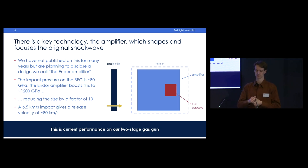The amplifier does two things. First, it boosts the effective velocity - the projectile hits at one velocity, the fuel capsule collapses at much higher velocity. This is existing performance on the BFG: 6.5 kilometer per second impact gives a release velocity of 80 kilometers per second, a big amplification. Second, the amplifier creates convergence, which is extremely important for inertial fusion - a very effective way to get high concentration of energy and very high density state of matter.